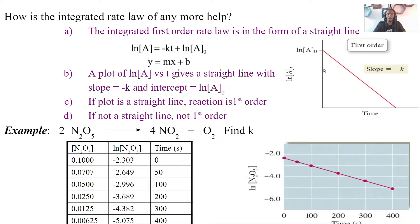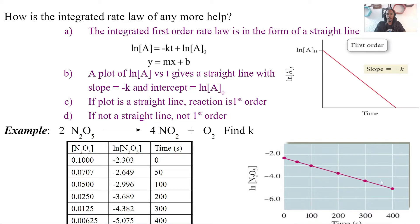Looking at data, for instance with the decomposition of dinitrogen pentoxide producing nitrogen dioxide and oxygen, we can plot this data. We have our time on the x-axis and the natural log of our concentration, ln[A], on the y-axis. We plot our data points and are able to determine concentration over time from the graph.